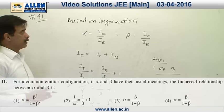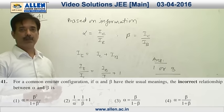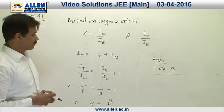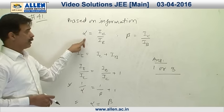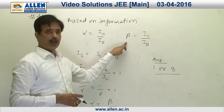Question number 41. This question is based on information. As we know, alpha and beta are parameters, and they are defined by alpha is IC upon I, beta is IC upon IB.